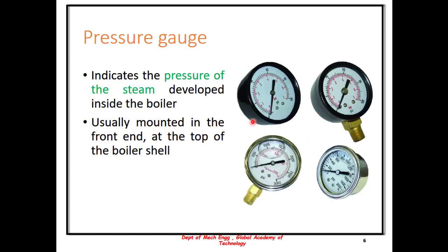The pressure gauge, as the name suggests, indicates the pressure of the steam that is developed inside the boiler. It is usually mounted at the top of the boiler shell at the front end of the boiler. The units of measurement of pressure being either psi or bar as needed.